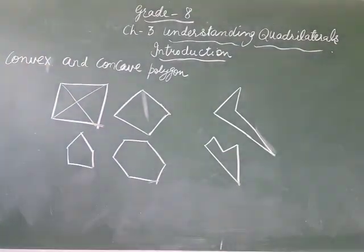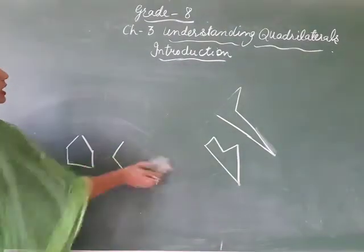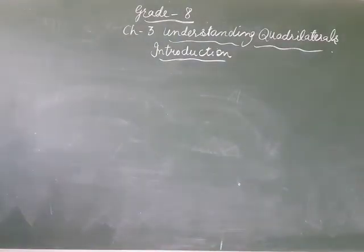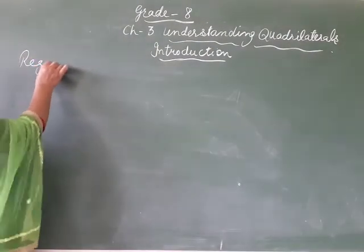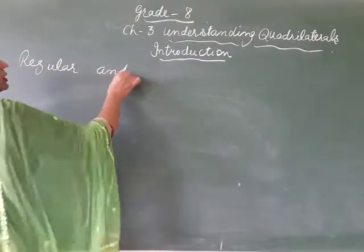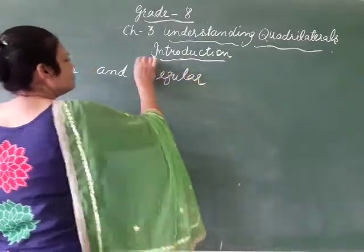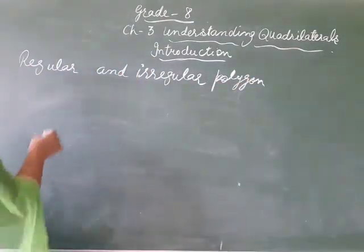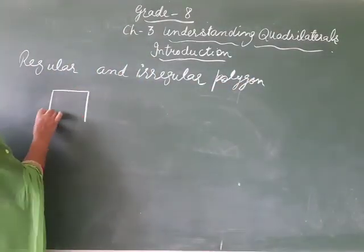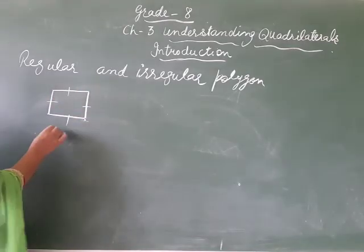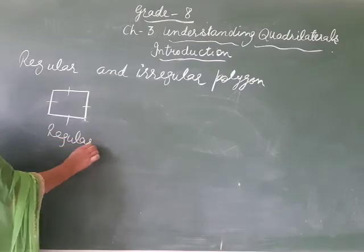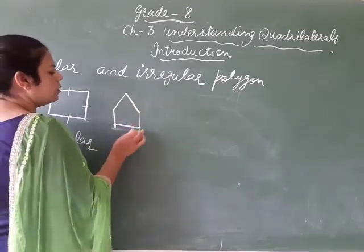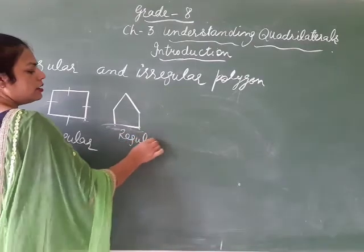Next is regular and irregular polygons. Regular polygons are those which have all sides equal in length. They are called regular polygons. Like this is a square — all sides are equal, so this is a regular polygon. This is a regular pentagon — its all sides are equal.